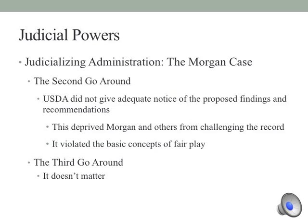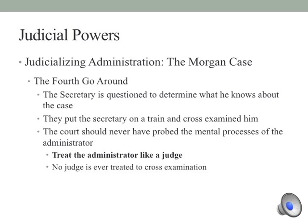In the second go around, the USDA didn't provide adequate notice of proposed findings and recommendations, which prevented Morgan from challenging the particular record and violated the concept of fair play. Administrative agencies, before they can act, have to provide adequate notice — just as any court must provide notice to an individual. In the fourth time around, the secretary was cross-examined to determine what he knew about the case. When it finally reached the Supreme Court, they said you cannot treat a secretary or administrator like this, because they are very much like a judge, and no judge is cross-examined to determine what they know about a case.